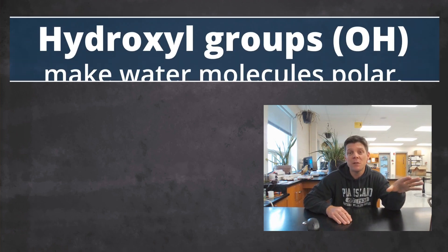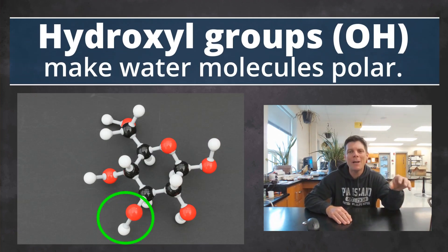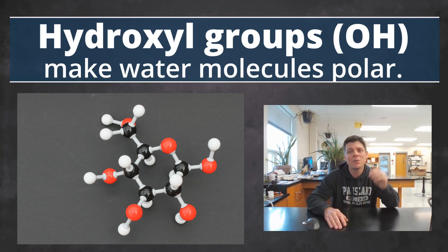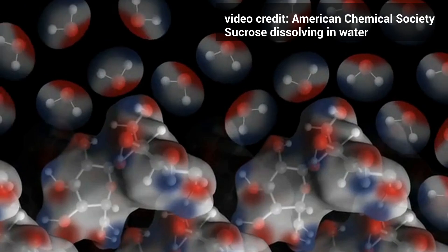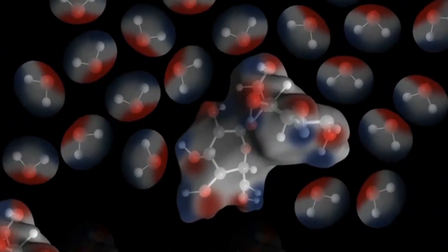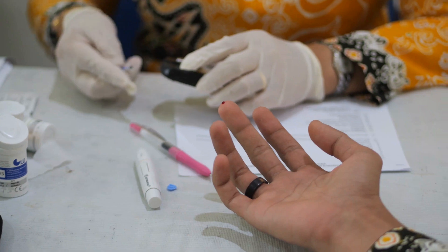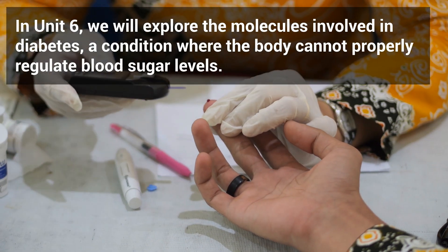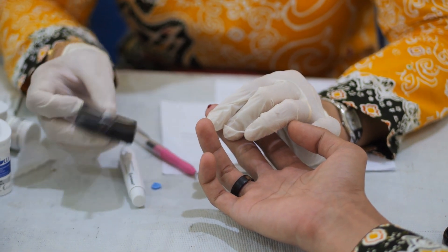The presence of many hydroxyl or OH groups on carbohydrates mean that they are polar molecules, which can form hydrogen bonds with polar water molecules. This means that simple sugars like glucose and sucrose dissolve easily in water. Glucose is commonly called blood sugar because it dissolves in the blood and is carried to all the cells of the body by the circulatory system.